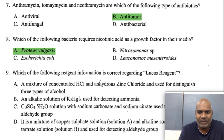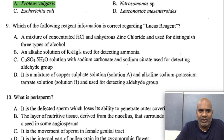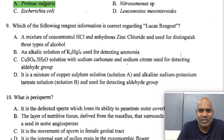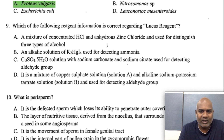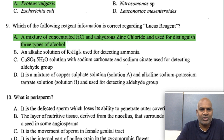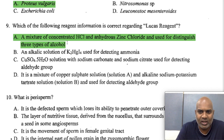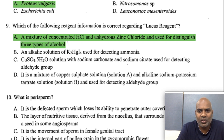Which reagent information is correct regarding the Lucas reagent? Lucas reagent is a mixture of concentrated HCl and anhydrous zinc chloride, used for differentiation of three types of alcohols: primary, secondary, and tertiary. The answer is A — it is not an alkaline solution of K2HgI4, copper sulfate, or alkaline sodium potassium tartrate solution.